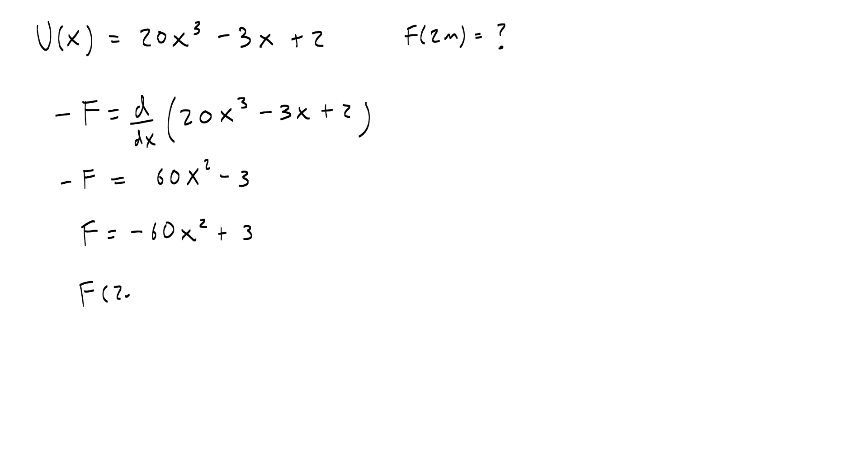Now to find the force at 2 meters, I just plug in 2. All right, so 2 times 2 is 4 times negative 60 is negative 240 plus 3 is negative 237 newtons. So that's how you can use the potential energy function to figure out what the force at a certain position is.